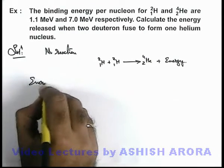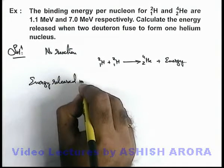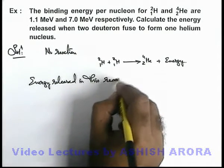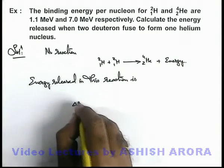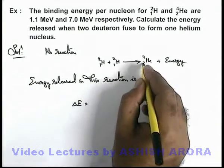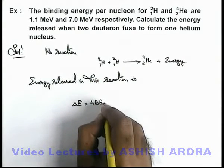In this reaction, this can be written as ΔE. It'll release the total amount of energy equal to 4 times the binding energy per nucleon of helium minus 4 times that of deuterium.